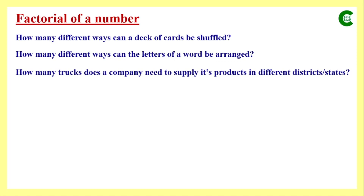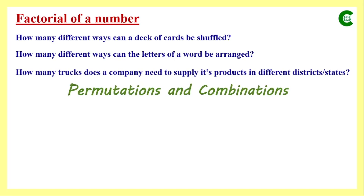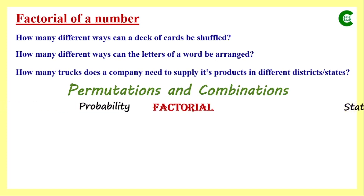The answer is that we need the help of permutations and combinations, or more precisely, we need the help of factorial, which is one of the important functions in probability and statistics — especially in the era of machine learning and data science. Factorial plays a very important role in mathematics, statistics, and programming.